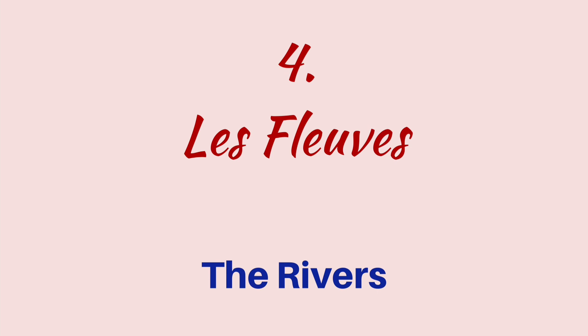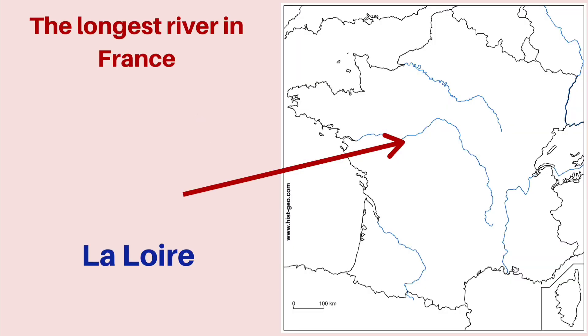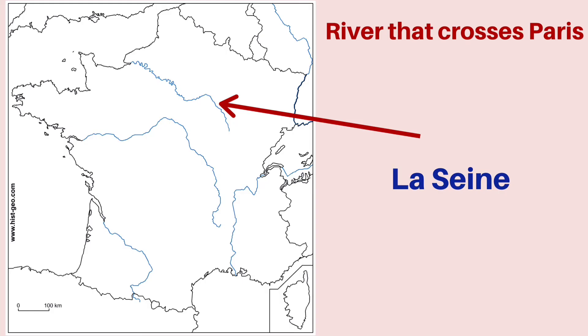Lastly, we are going to look at the rivers of France — les fleuves. The longest river in France is known as la Loire. The river that crosses through the city of Paris is la Seine. Of course, you also have other rivers apart from la Loire and la Seine.